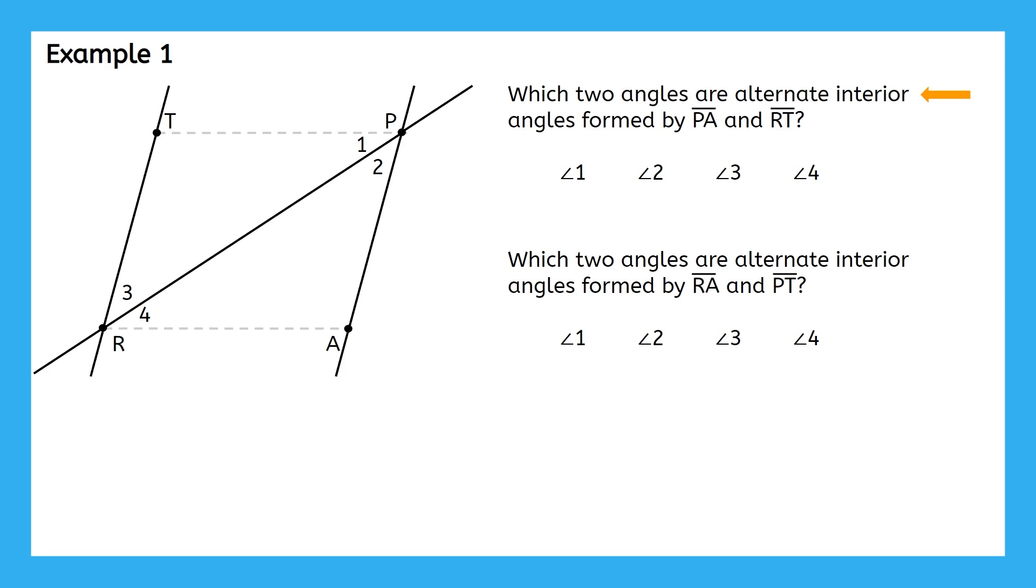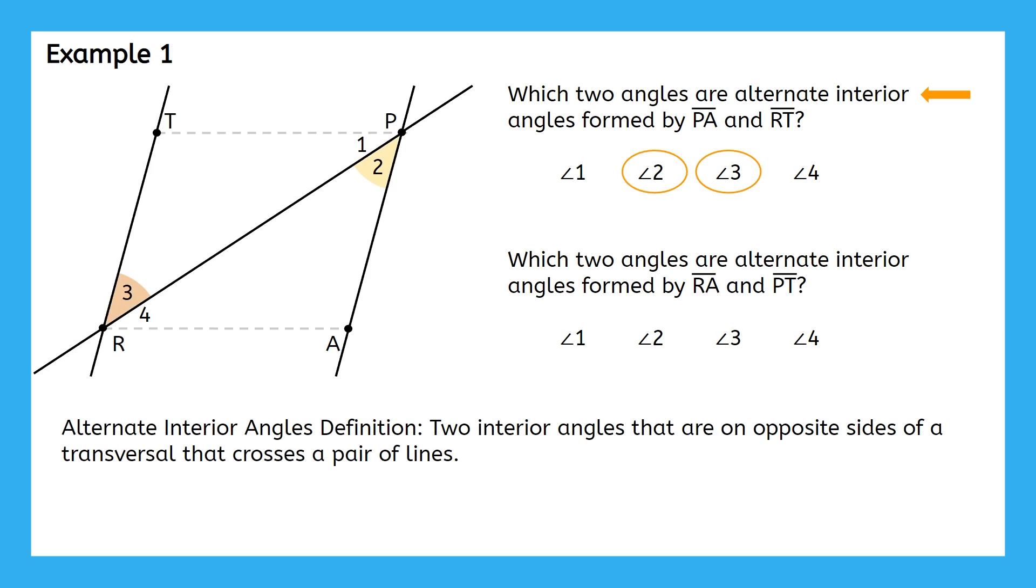If you couldn't tell before, go ahead and identify which two alternate interior angles are formed by PA and RT. Did you identify angle 2 and angle 3 since they are on the opposite sides of the transversal that crosses PA and RT?